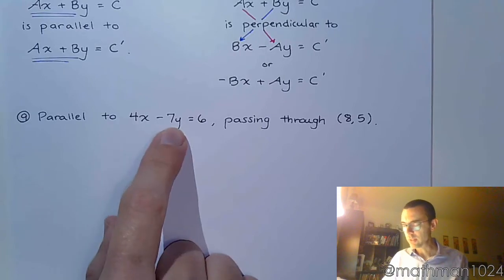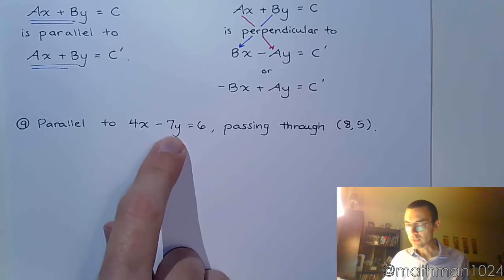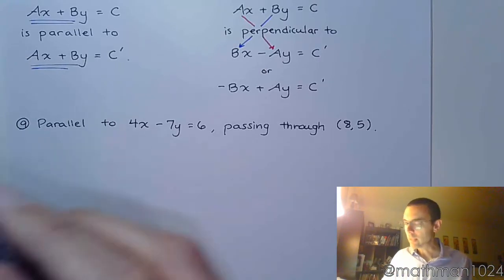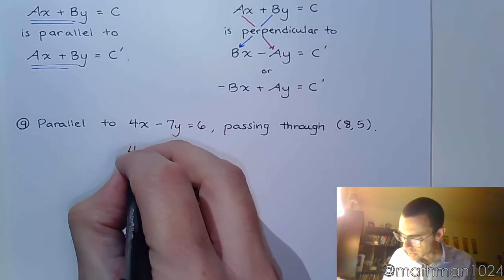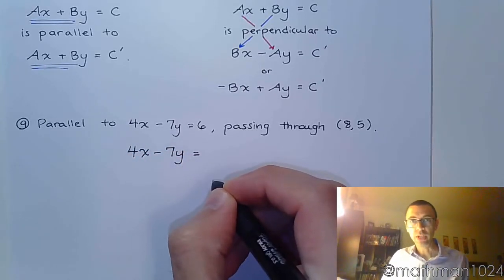So you want it to be parallel to this and passing through that point. Well, as we see above, if you want it to be parallel to that, you keep that the exact same way. So that's going to be 4x minus 7y. What does it equal?